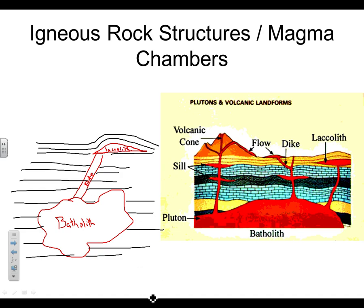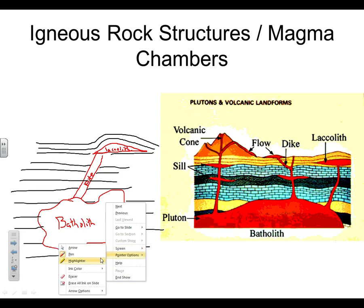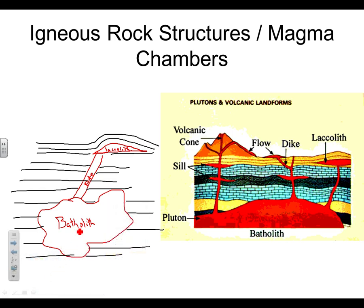The last one we're going to talk about is a sill. A sill is a tube or sheet that runs parallel to the rock layers. Kind of like a dike — when a dike went perpendicular or cut through the rock layers — the sill is going to go parallel. I'll draw it here and label it sill, S-I-L-L.